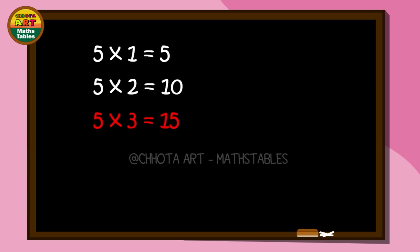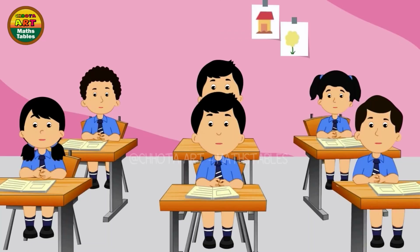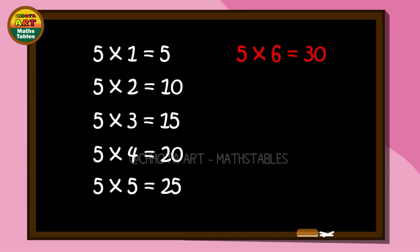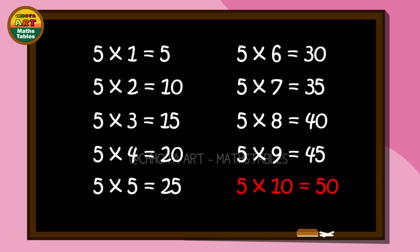5 × 3 = 15, 5 × 4 = 20, 5 × 5 = 25, 5 × 6 = 30, 5 × 7 = 35, 5 × 8 = 40, 5 × 9 = 45, 5 × 10 = 50.